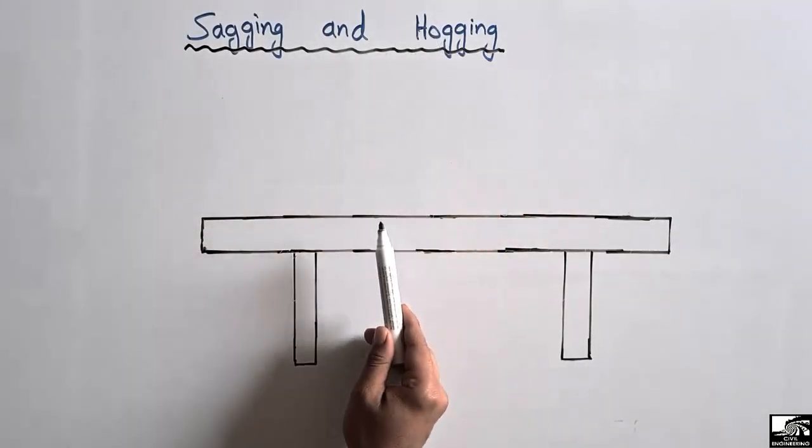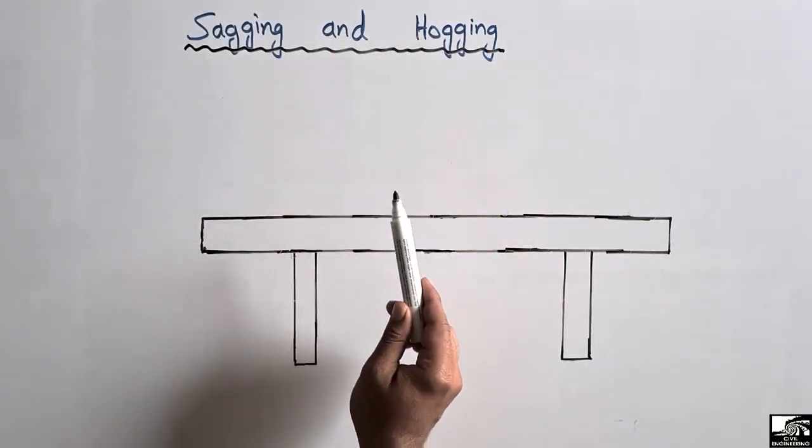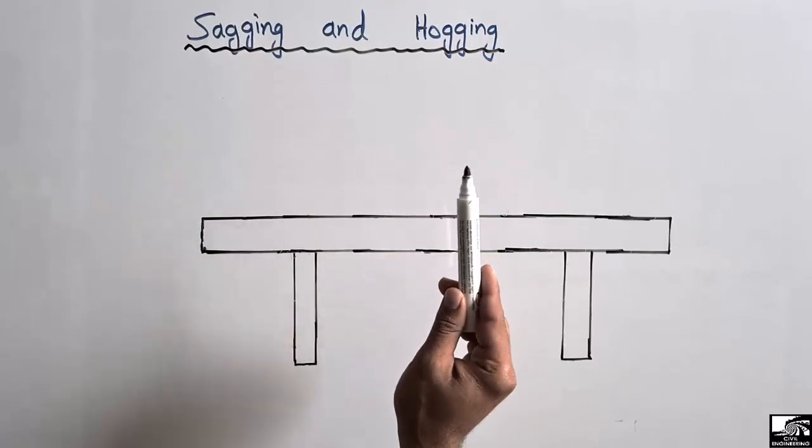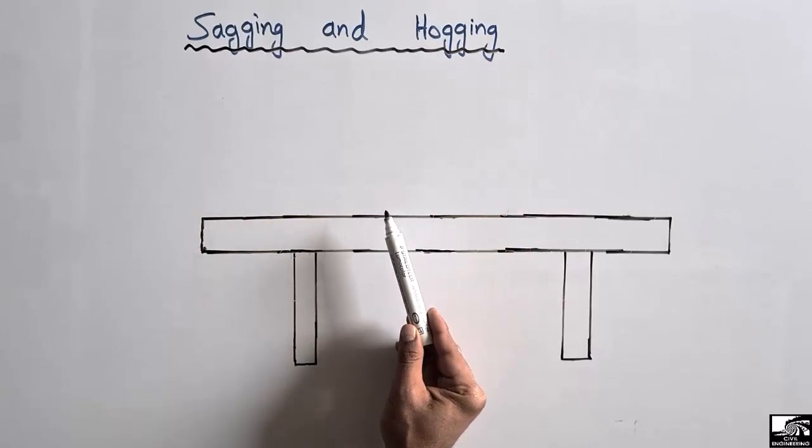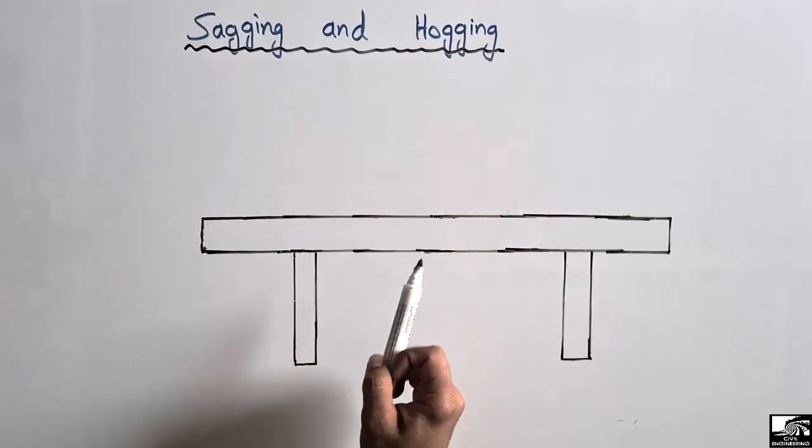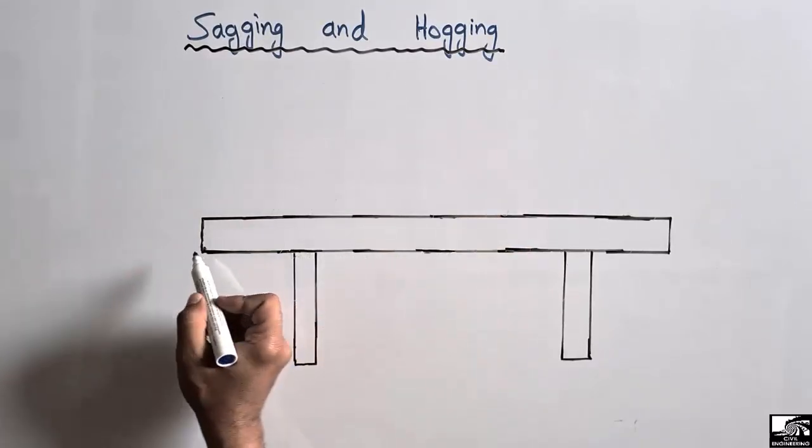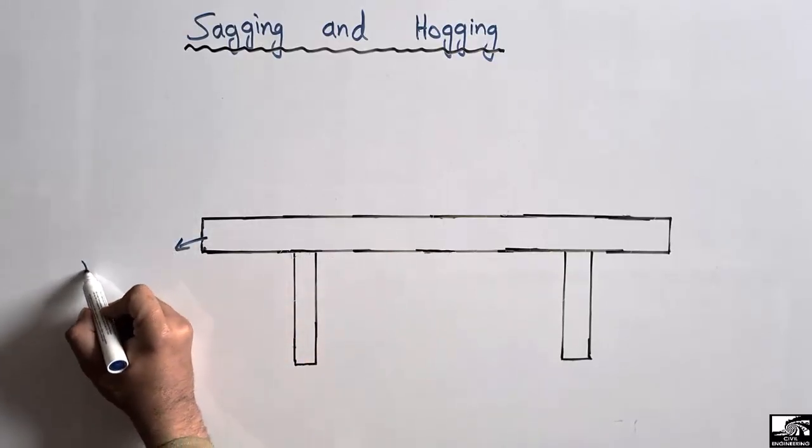These two terms are mostly used in the case of beams, because beams show bending under loading. These terms are used to differentiate the bending of the beam. Consider that this horizontal member is a beam, and this beam is supported by two vertical members, which are columns.